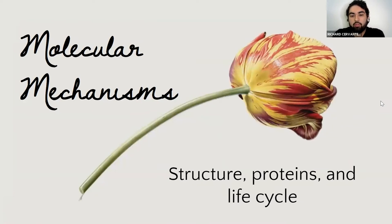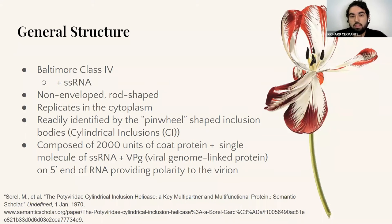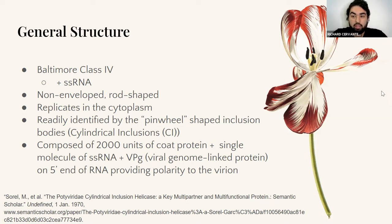Now we're going to go through the molecular mechanisms — the structure, the proteins, and just the general build of its biology. The general structure is that it is a single-stranded positive RNA molecule encased in 2,000 units of coat protein, with a single molecule within the coat proteins. It's not enveloped, it's rod-shaped and flexuous. It's able to replicate inside the cell's cytoplasm, and potyviruses are identified through pinwheel-shaped inclusions, also called cylindrical inclusions.